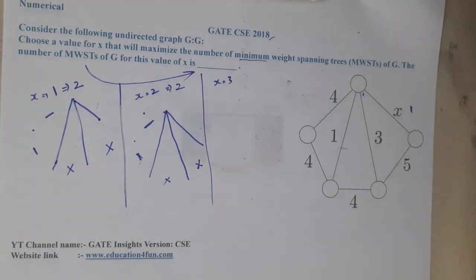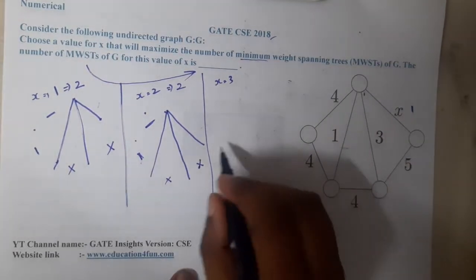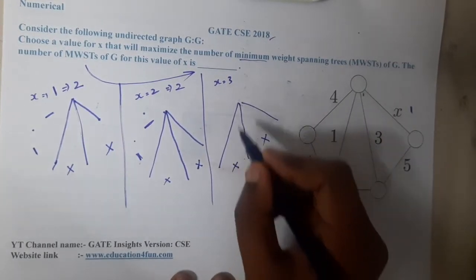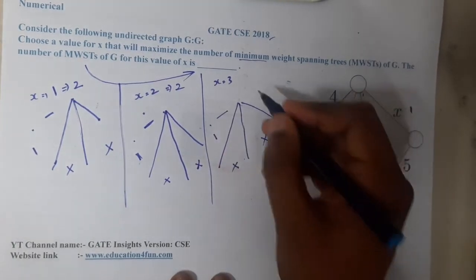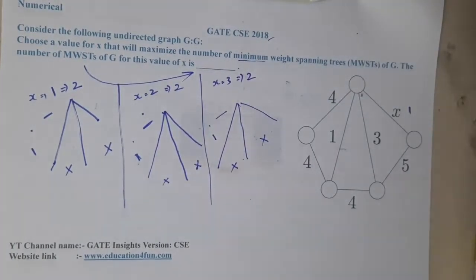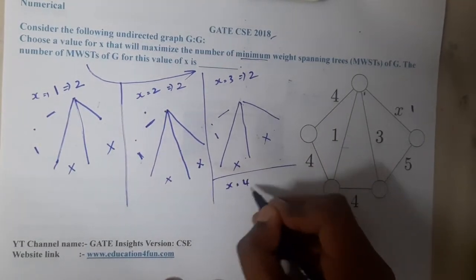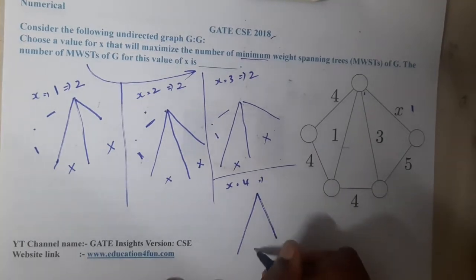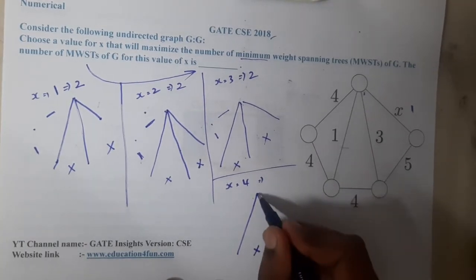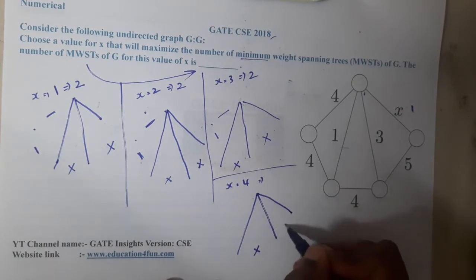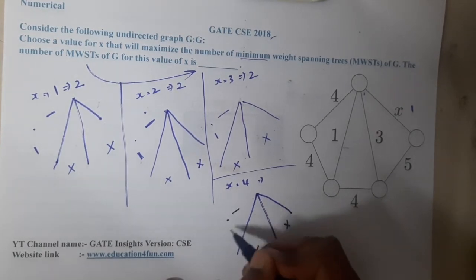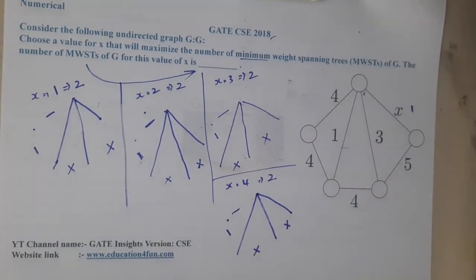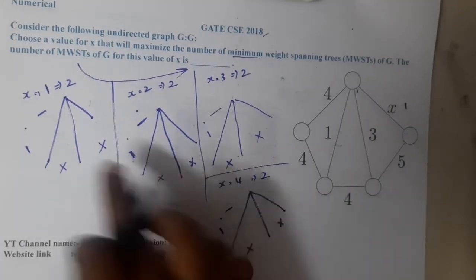Let us continue for x=3. I think 3, 4, or 5 will be the answer. If the value is 3, I will start with this edge, then take this edge and this edge. This edge cannot be taken, this edge cannot be taken, so again I am having only two options. Moving on to x=4: I will take this and this, cannot take this, the next minimum value is this, I take it, and again I have only two options.